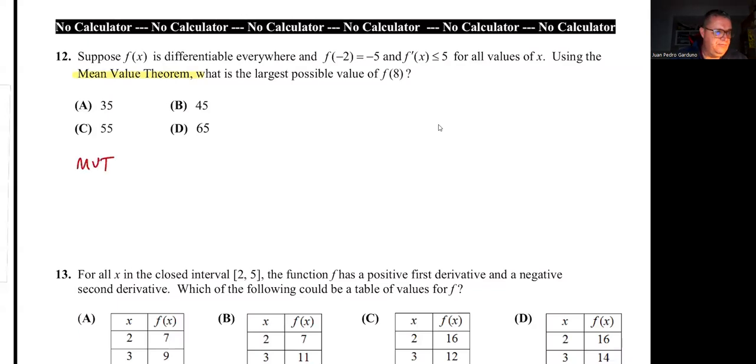One important thing here is that they mention the mean value theorem. The mean value theorem says that the average rate of change has to be equal to the instantaneous rate of change. The way we write that with formulas is the average rate of change is just the slope formula, f(b) - f(a) divided by b - a. And instantaneous rate of change is f'(c). So the average rate of change or the slope of the secant line equals the slope of the tangent line at least at one point x equals c, but it could be at more points.